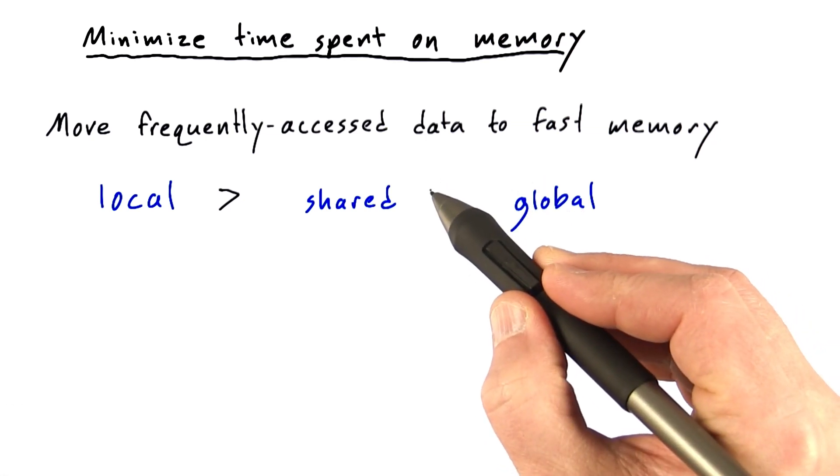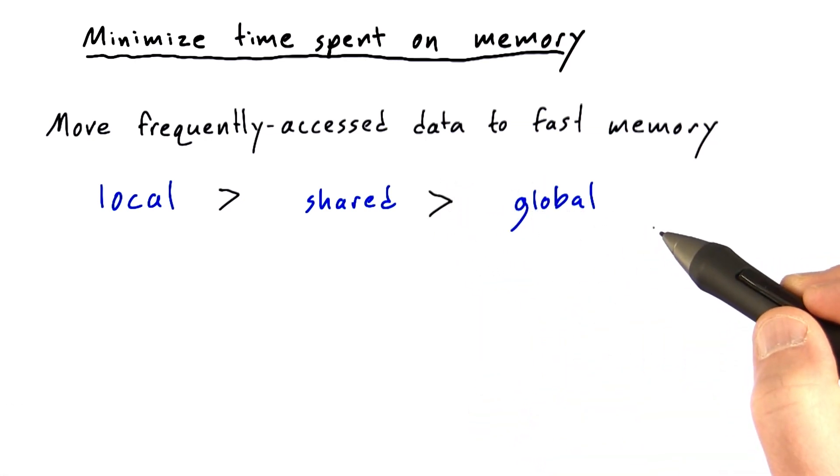And more or less, it's true to say that local memory is faster than shared memory, which in turn is faster than global memory.